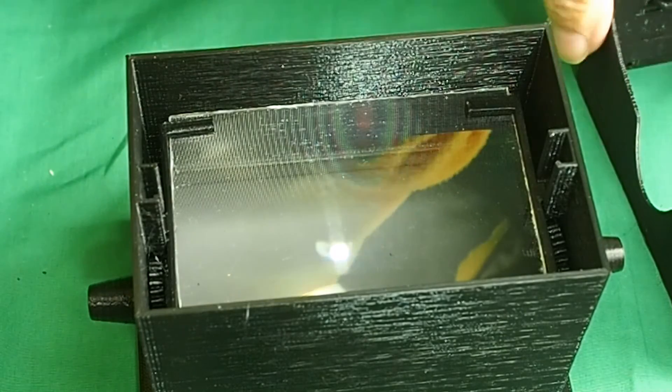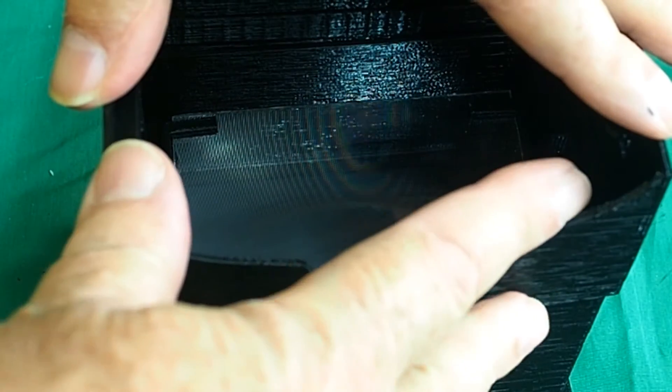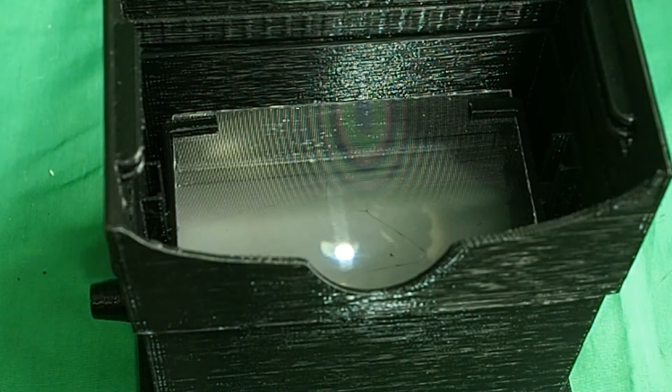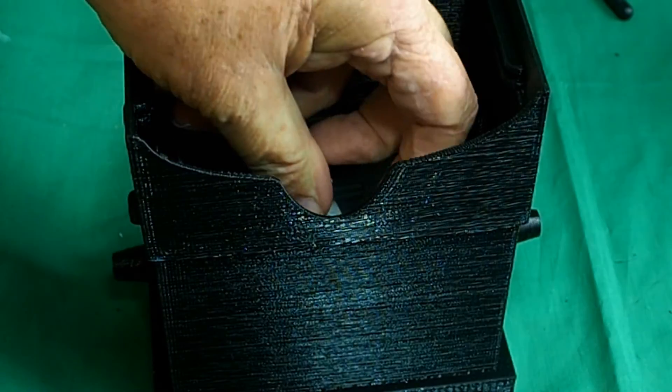Now the eye piece just plugs straight onto there. Push it down until it meets the stop, and the eye piece is now attached to the main goggles body.